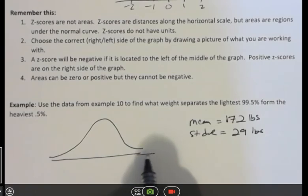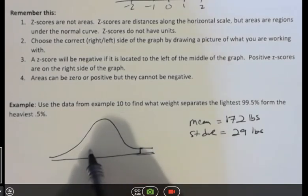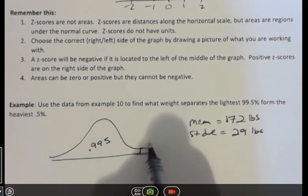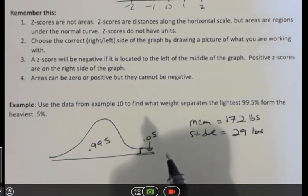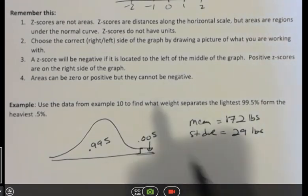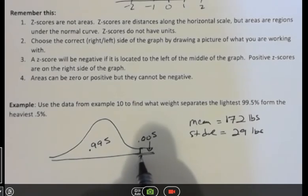And now I'm asking, what is the number that separates the 99.5 or 0.995 from the 0.05, right? 0.005, sorry. So I want to know what this is right here.